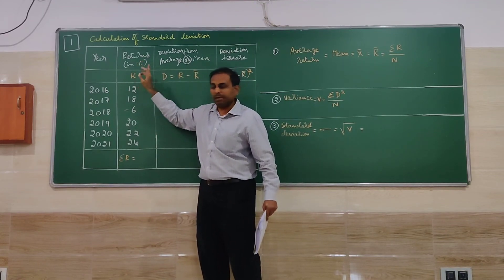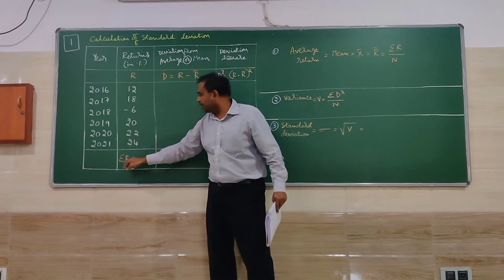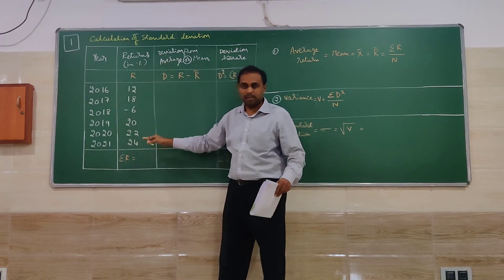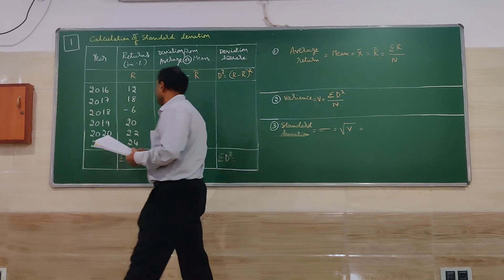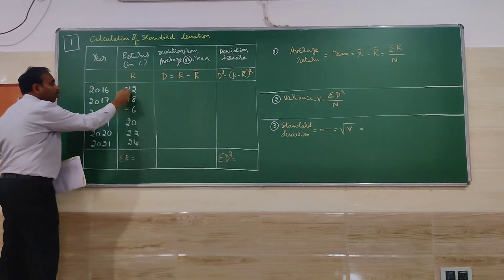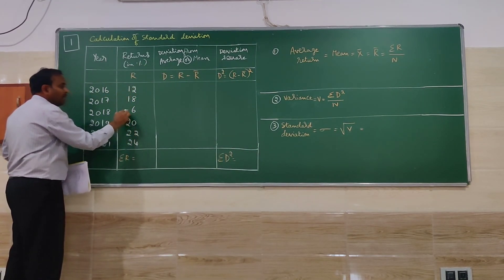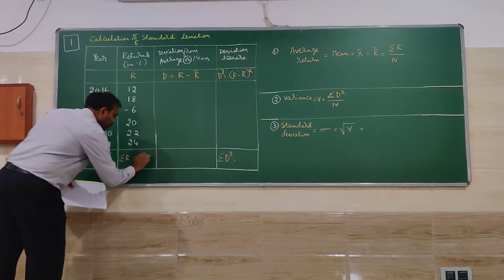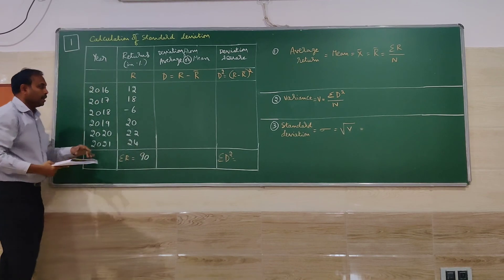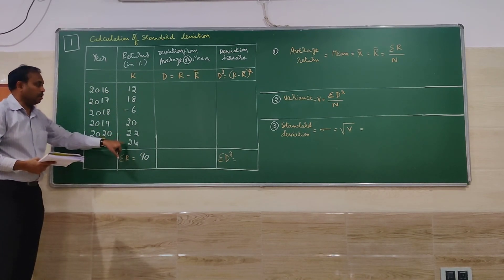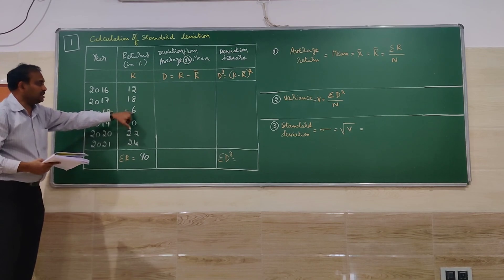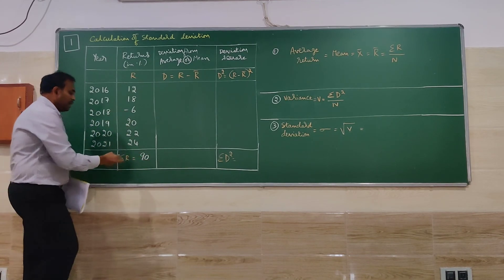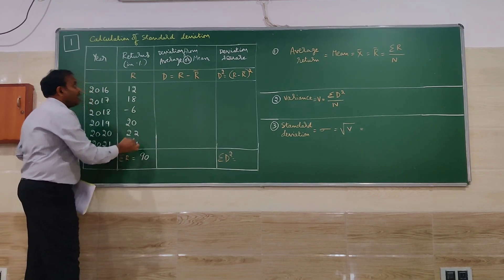So R represents returns and I have written here summation R. Summation R is the total returns what has been given there. So here we have to add all the plus values and minus 6. So if you do that you are going to get here 90 as the total. So 96 will be the total of the plus and minus 6 is there so it is going to be plus 90. So plus 90 is summation R.